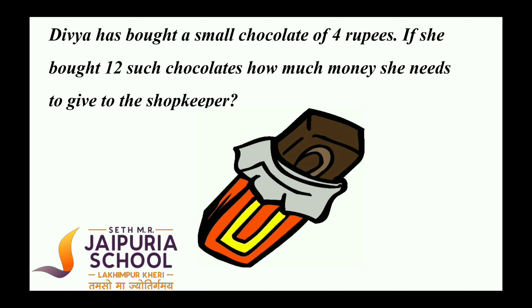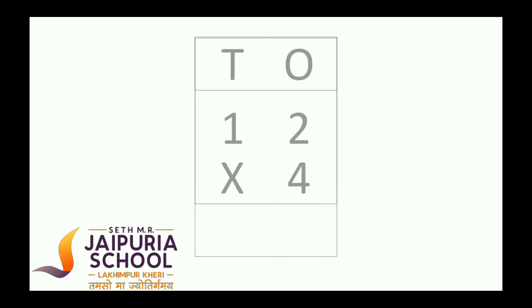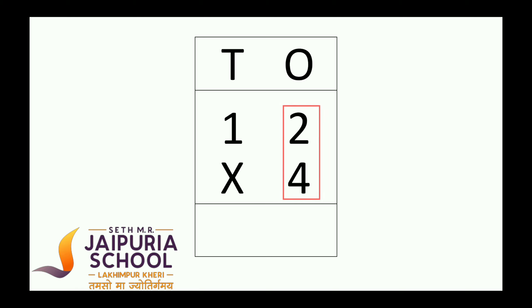Let's solve it. First, write the numbers in the place value chart. Now, multiply the digit in the ones place with the multiplier 4. So, 2 × 4 is equal to 8 ones.